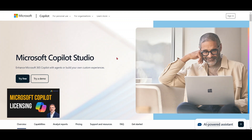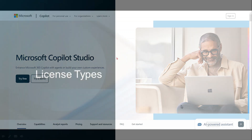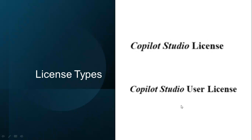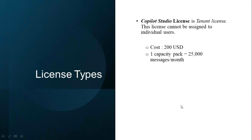There are two types of licenses: the Copilot Studio license and the Copilot Studio user license. We'll talk about each one by one. The Copilot Studio license is a tenant-level license — this license cannot be assigned to individual users.